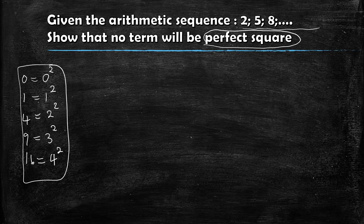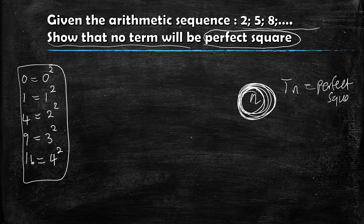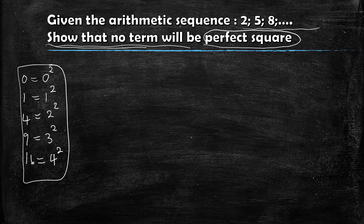If there's a perfect square, I'm going to let my Tn be a perfect square. I want to show that no term in this sequence will be a perfect square. Using this strategic approach, you let your Tn be a perfect square, then calculate n — you're calculating the position. To show that no term will be a perfect square means you won't get any valid position when Tn equals a perfect square, because there's no term that's going to be a perfect square.